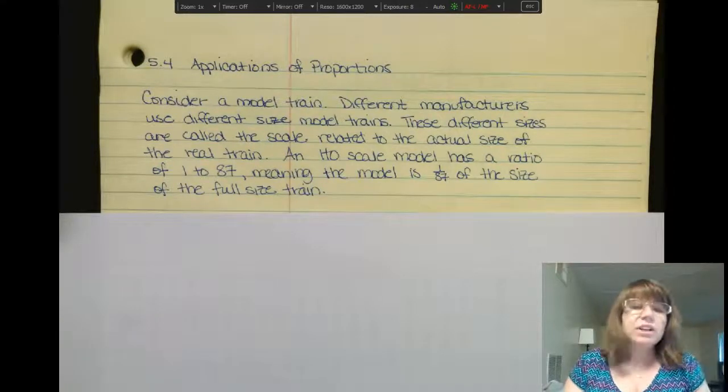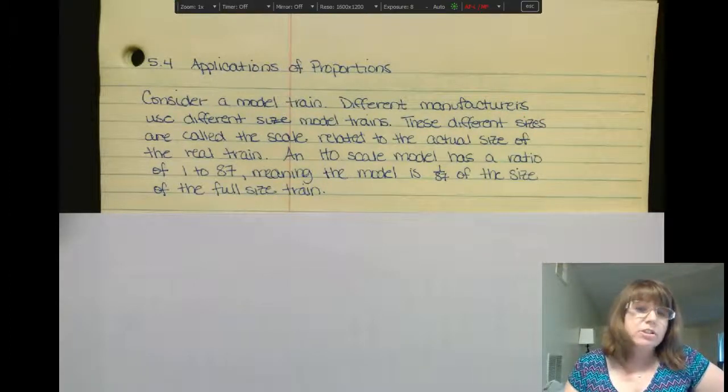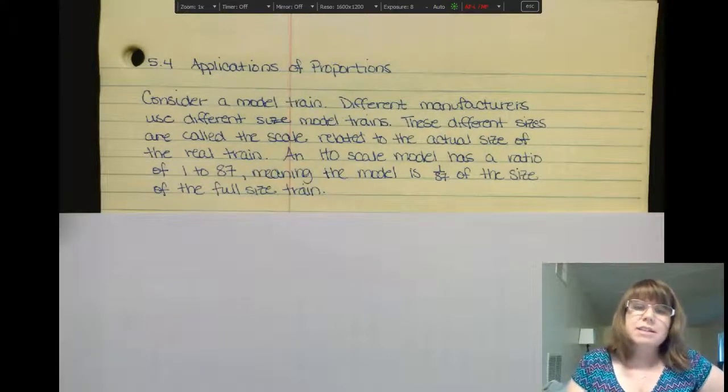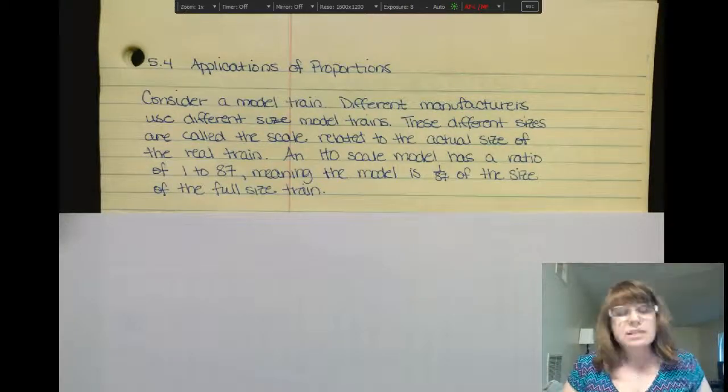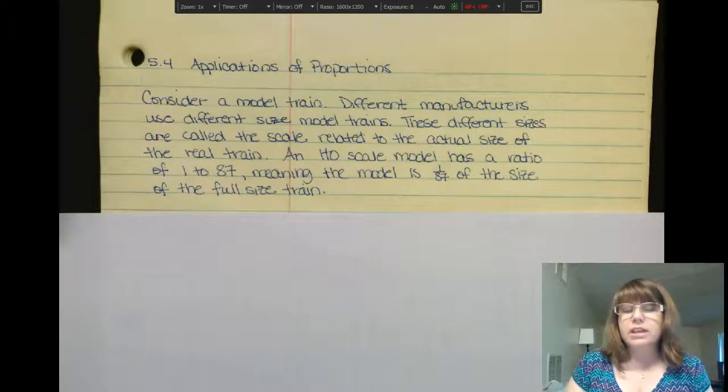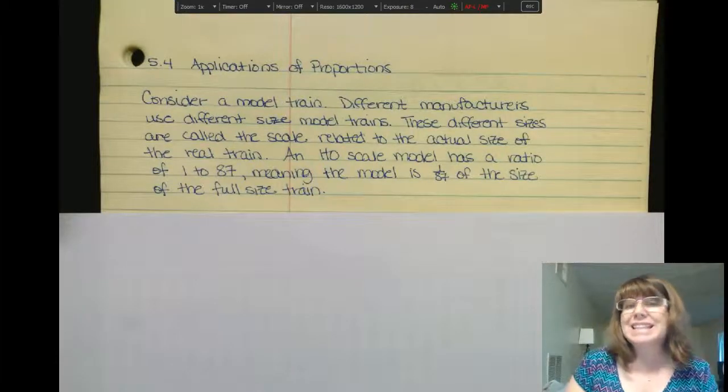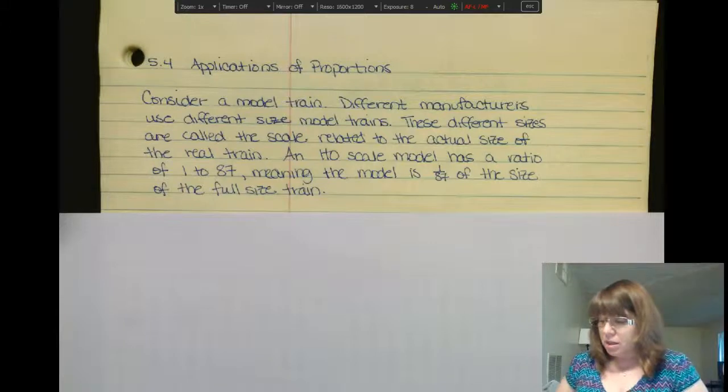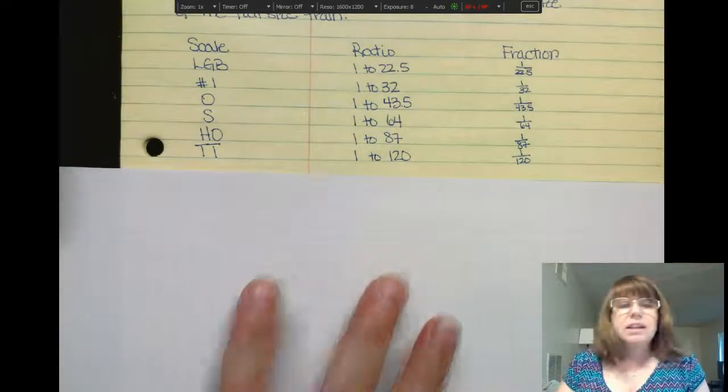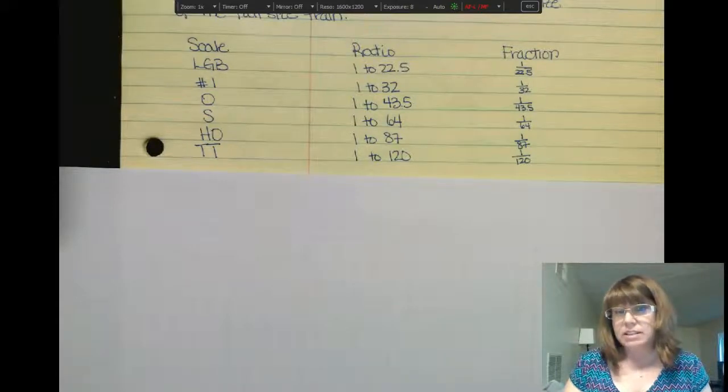If you have ever considered, maybe you even know somebody who collects model trains, different manufacturers actually use different size model trains. And each of these sizes are called a scale that's related to the actual size of the real train. For example, an HO scale model has a ratio of 1 to 87, meaning that the model is 1/87th of the size of a full train. So I just want to take a little bit of time to actually go through and see the same type of object, like a model train, might have a different scale, a different ratio, a different proportion to the actual train.